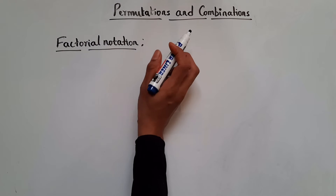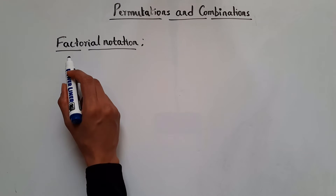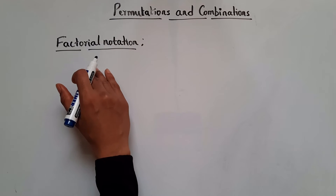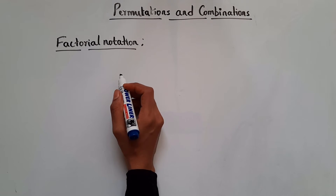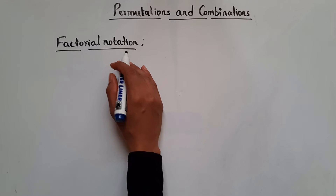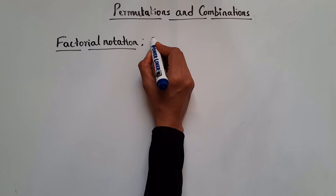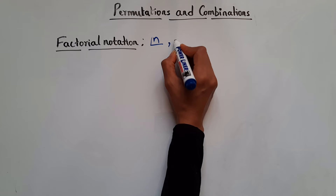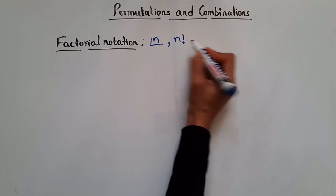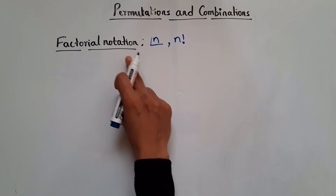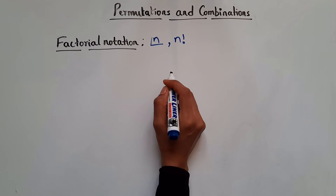In order to learn permutations and combinations, first we need to know what is factorial notation or factorial of a number. We will be using this in permutations and combinations. Factorial notation is defined only for positive numbers.